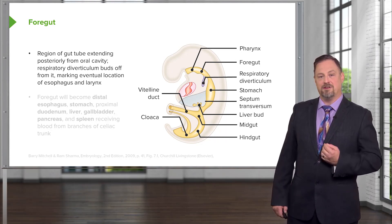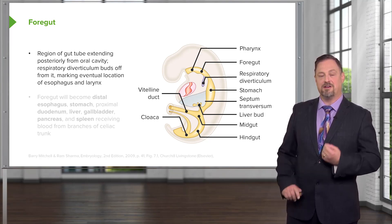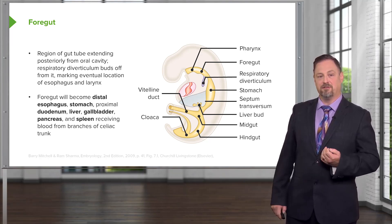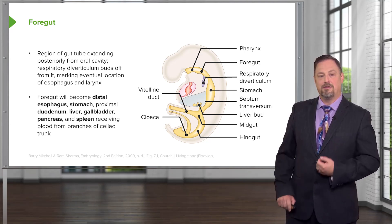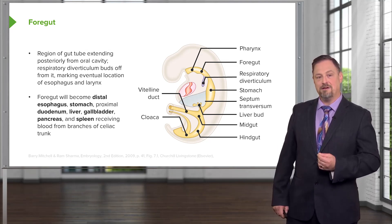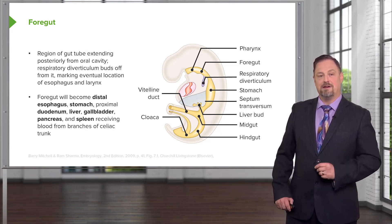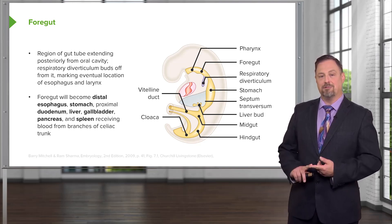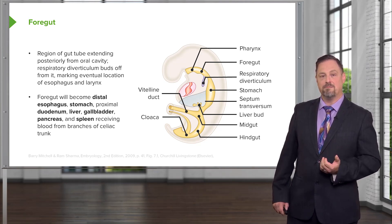Initially it's going to be a simple tube but will develop into the various foregut organs including the distal esophagus, the stomach, the liver, the gallbladder, the spleen, the proximal duodenum, and a large portion of the pancreas. It receives its blood from the celiac trunk or celiac artery coming off of the aorta.